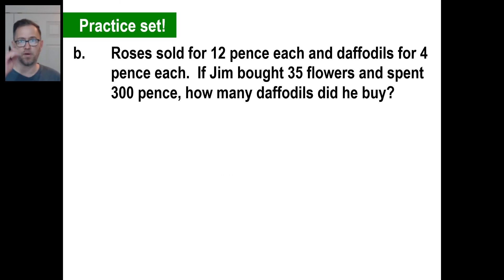Go ahead and pause it and try B. Two equations. Get them. Roses sold for 12 each and daffodils for four each. Jim bought 35 flowers. Stop. That means the roses plus the daffodils. There are 35 of them total, right? Roses are 12, daffodils are four, and that's a total of 300. So something is equal to 300.